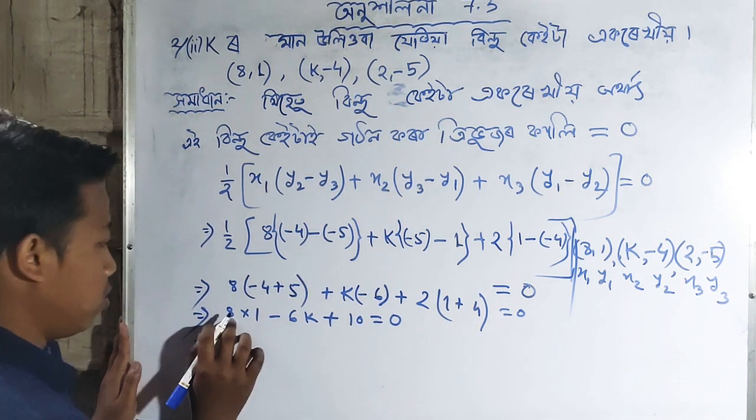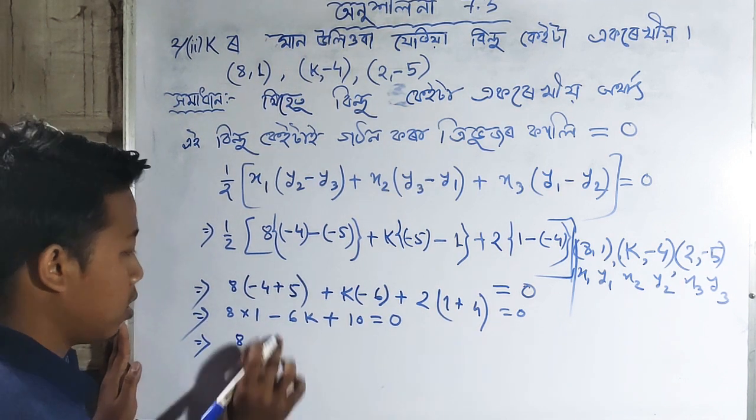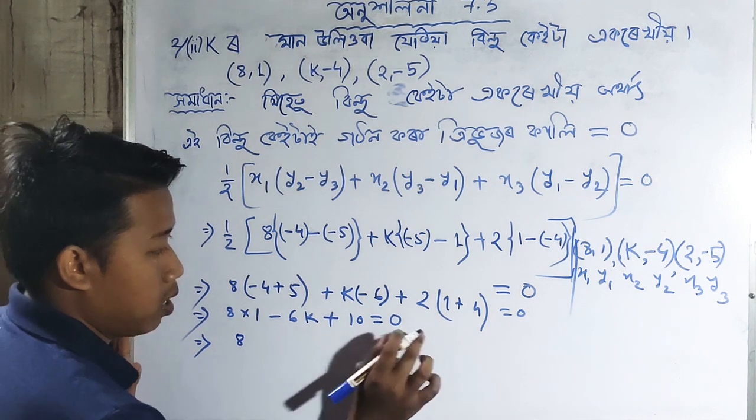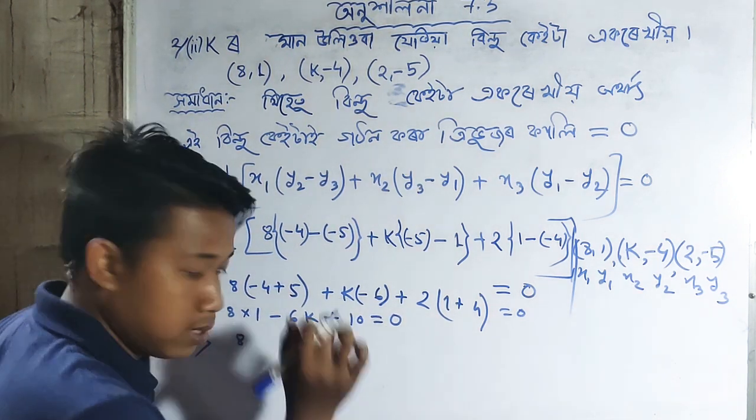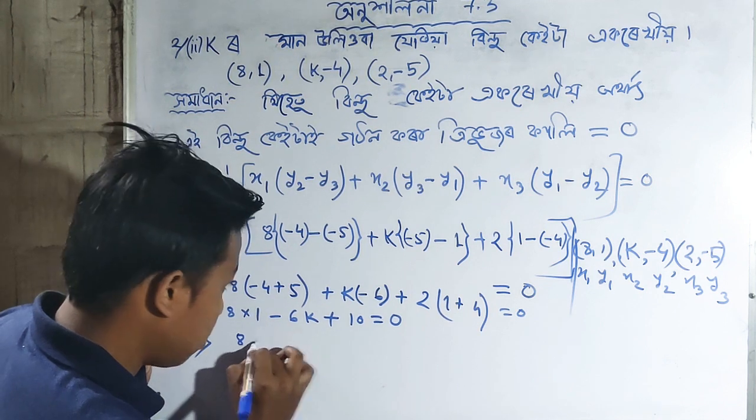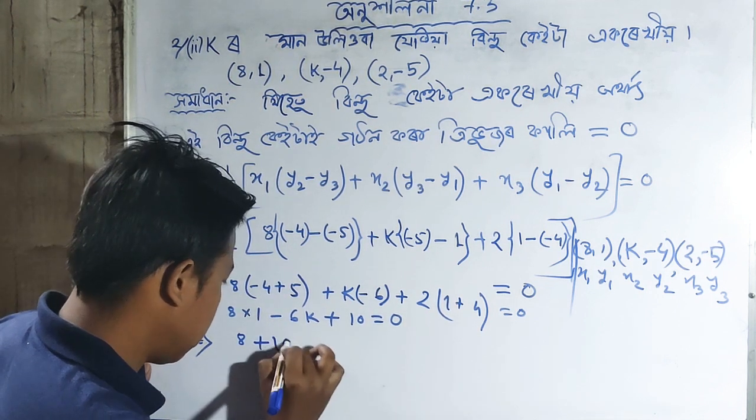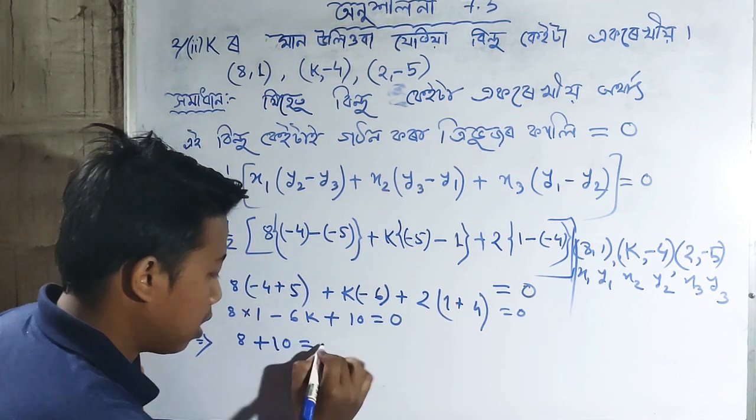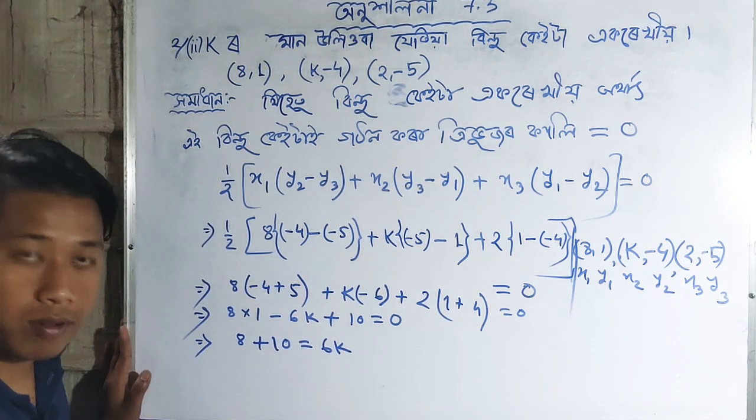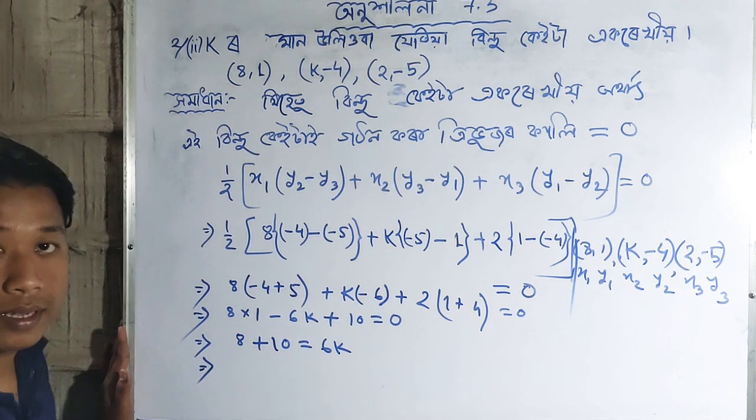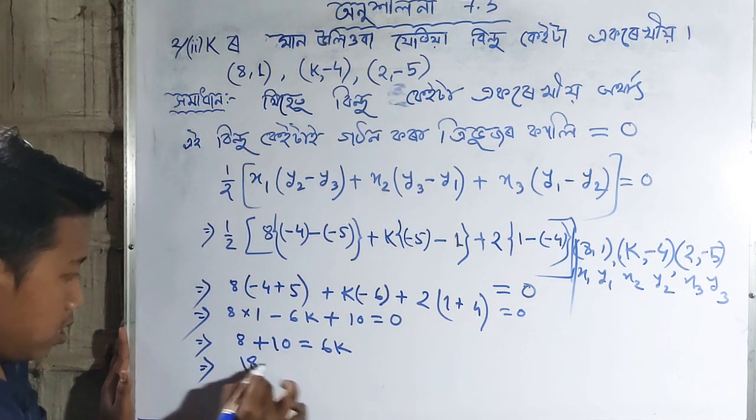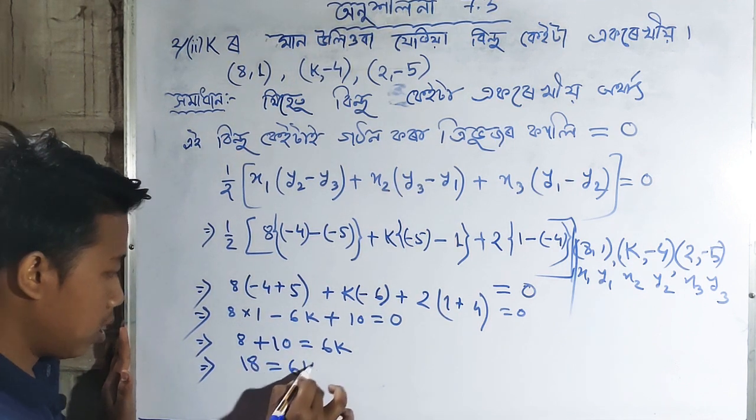Now collecting like terms: minus 6K on one side. Moving terms around: plus 10 minus 6K. Then 3 plus 5 plus 10 equals 18. So we have 18 equals 6K.